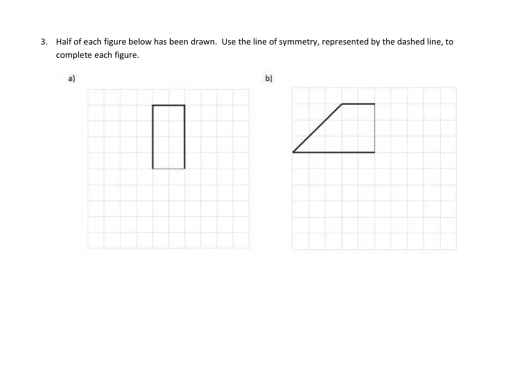Let's take a look at 3b. Half of each figure below has been drawn. Use the line of symmetry represented by the dashed line to complete each figure. So you'll see in b there's a very slight dashed line here. I'm going to go ahead and use my blue marker and see what I have to do to figure this out. So this is the line of symmetry. We need basically the same figure over here.